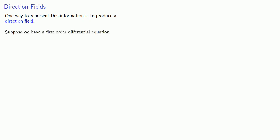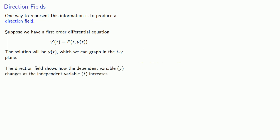Suppose we have a first-order differential equation. Remember that in principle, we can write this as a derivative equal to some function of the independent variable t and the solution to the differential equation y of t. The idea is that our solution will be y of t, and we can graph this in the t-y plane. Our direction field shows how the dependent variable y changes as the independent variable t increases.